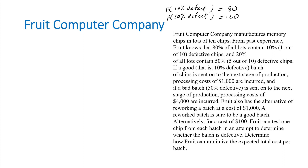If it's a good lot — that is, 10% defective — they call this a good batch. It costs $1,000 to process a good batch. A bad batch with 50% defective chips costs $4,000 to process. Basically, we don't know upfront if a batch is good or bad.